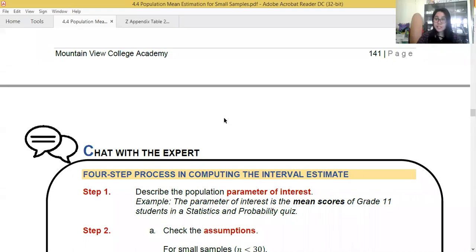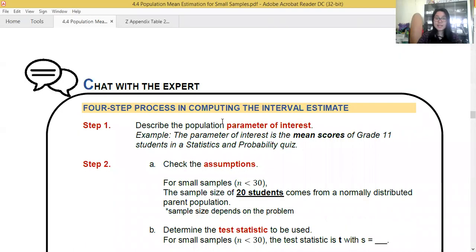Now let me continue on the four-step process in computing the interval estimate. Remember, I hope you remember for larger samples because they are very similar. Step one, parameter of interest. Step two, ATC. Assumption. This should be the sentence.